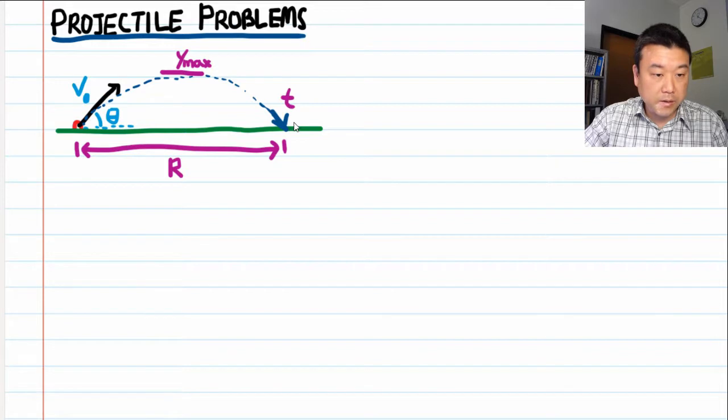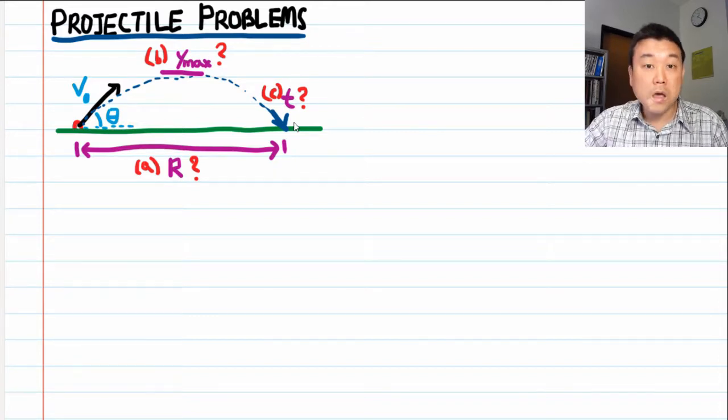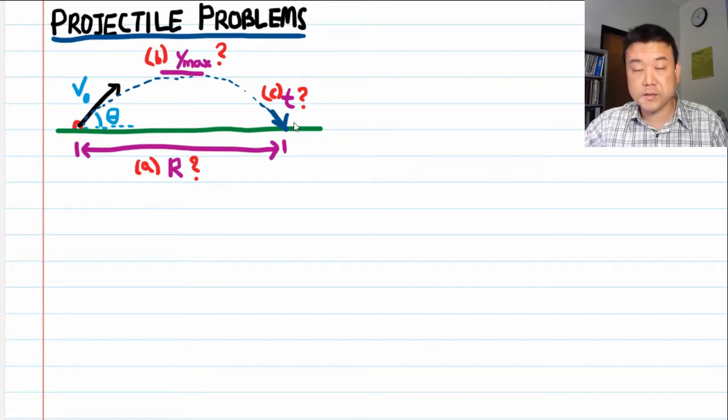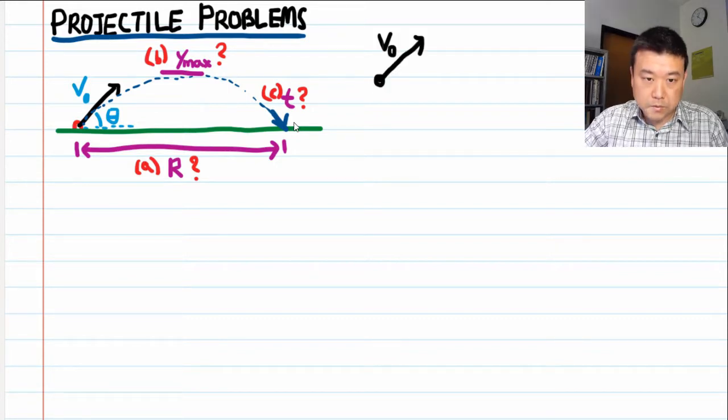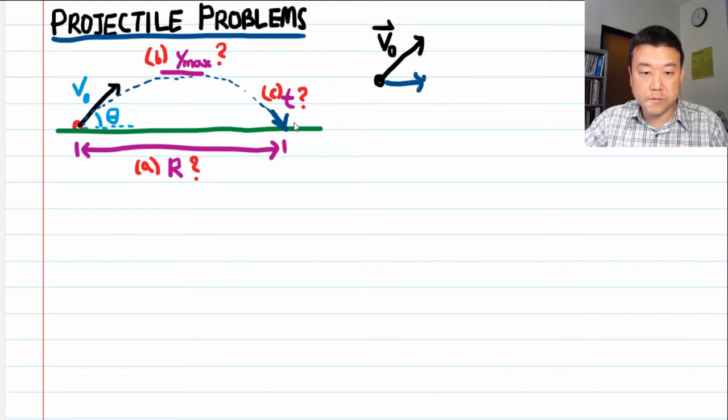So for our example let me label these A B and C and answer these questions. So the first thing you have to do is break down motion into components into the horizontal and vertical components and you start on that by breaking the initial velocity into horizontal and vertical components of the velocity.